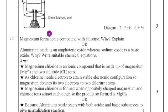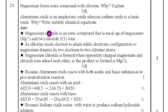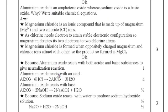Twenty-fourth question. Magnesium forms ionic compound with chlorine. Why explain or aluminum oxide is amphoteric acid whereas sodium oxide is a basic oxide. Why write suitable chemical equation? For both questions also, I have given the answer. You have to learn for the future, for your next final exam, you have to learn all the equations, everything. Concentrate on the state level question paper.